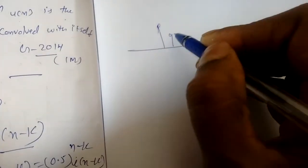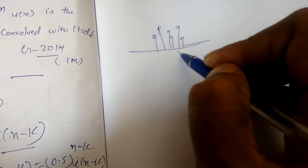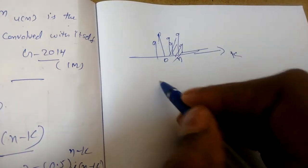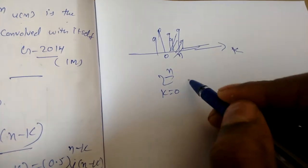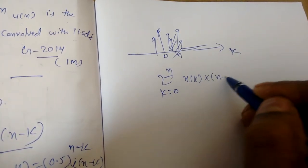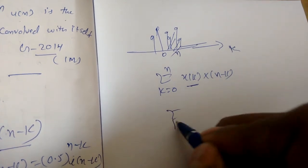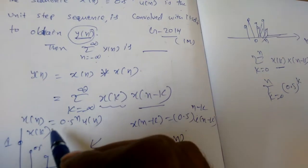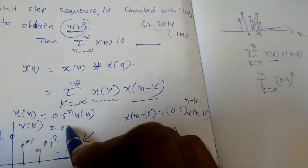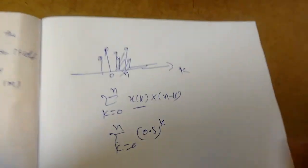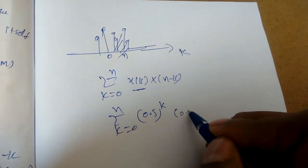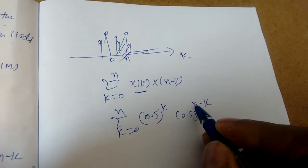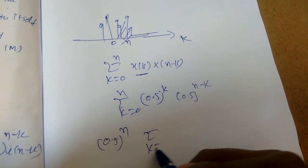For n >= 0, the common area is k = 0 to n. So y(n) = sigma from k = 0 to n of x(k) * x(n-k). We know x(k) = (0.5)^k and x(n-k) = (0.5)^(n-k). So the product becomes (0.5)^k * (0.5)^(n-k). Since (0.5)^n is a constant with respect to k, we can factor it out.